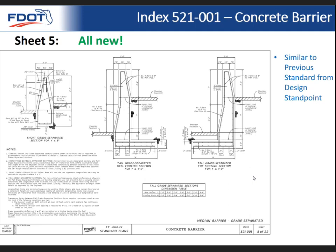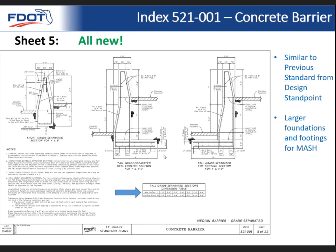Sheet five covers grade separated barriers — it's very similar to the previous standards in terms of how it works with grade separation. When I say 'all new,' I mean it's completely redrawn and all notes are rewritten for clarity, and it's been moved to single slope barrier, but most concepts are carried forward from the previous standard. There are minor changes in the heights that apply. Importantly, we have slightly larger spread footings for MASH — so if you're used to footings being a certain width, just know they've gotten a little larger, which you'll want to account for when planning which footing to choose and where your utilities happen to be.